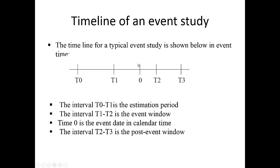t1 to t2 is the event window. Even if, say, Apple announces a big dividend increase on one day, we actually look at the surrounding days because some of that information may have leaked out beforehand. Also, sometimes news is fuzzy and people may take a few days to determine what the effect on the value of the firm should be. So we look a few days before the event and a few days after to capture the total effect on firm value. The interval t2 to t3 is the post-event window, which is used to see if the stock price effect during the event window is reversed over time.